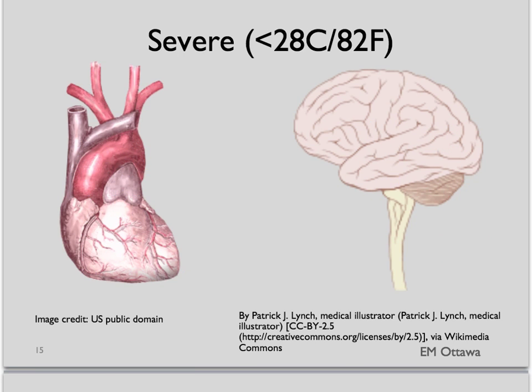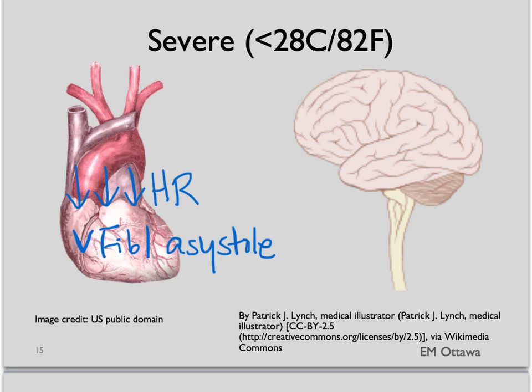Severe hypothermia occurs under 28 degrees Celsius. The heart rate is even slower, and the patient might have ventricular fibrillation or even asystole. Neurologically, the patient would be completely unresponsive.